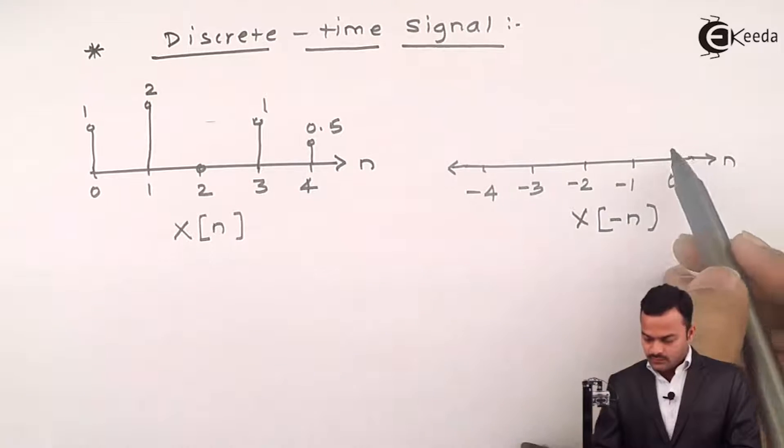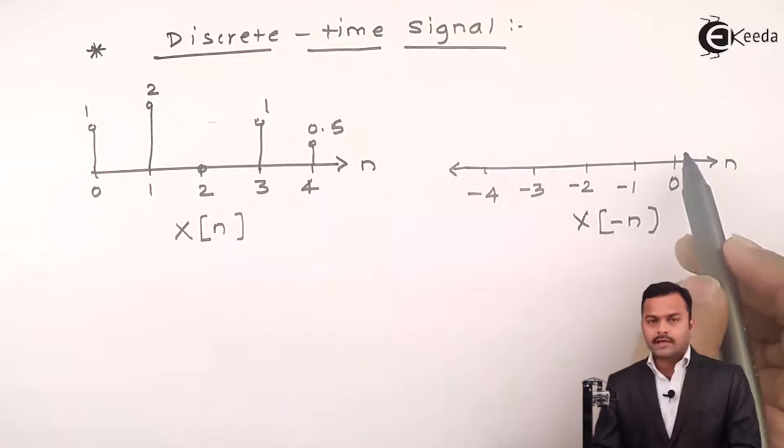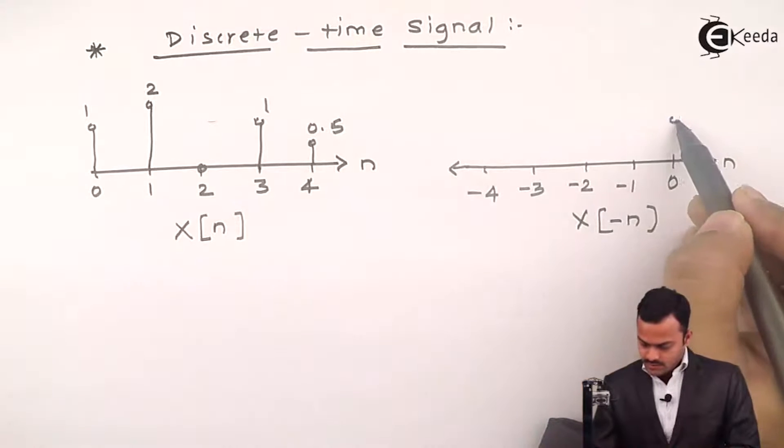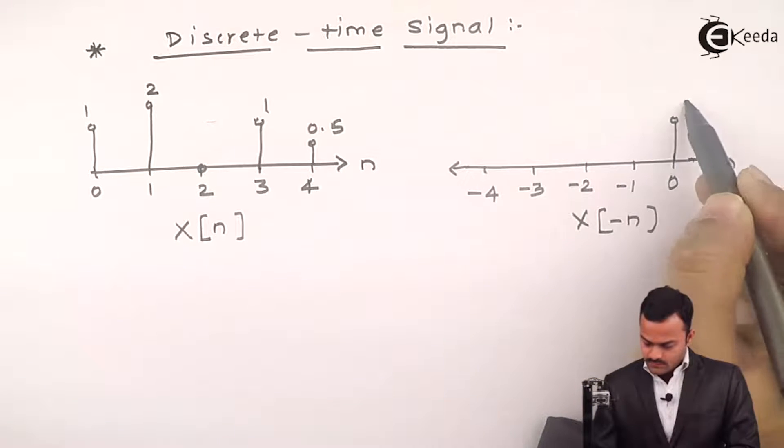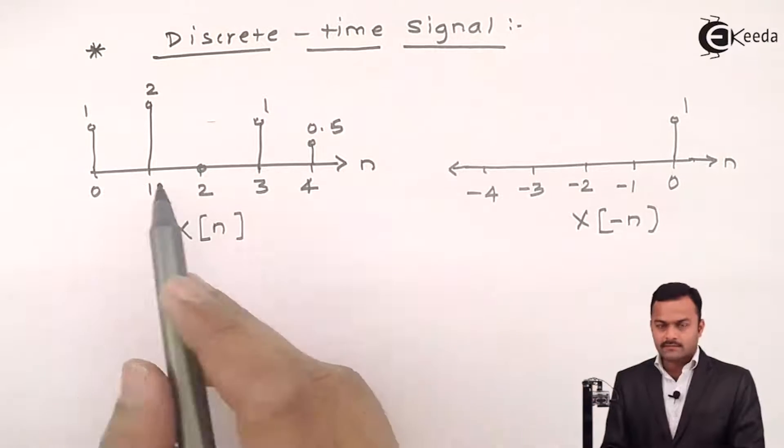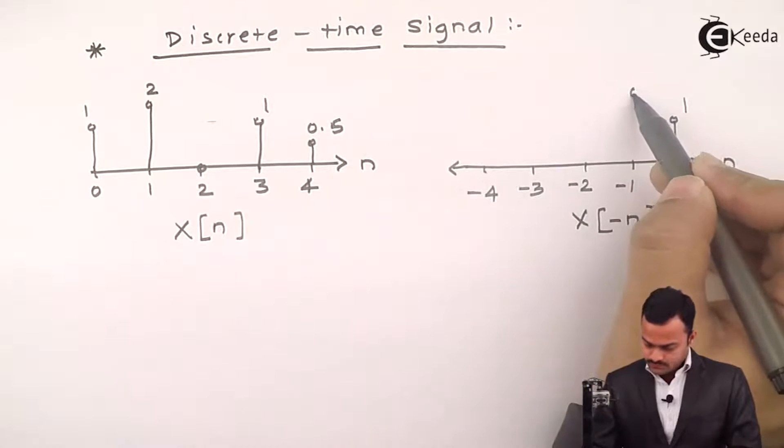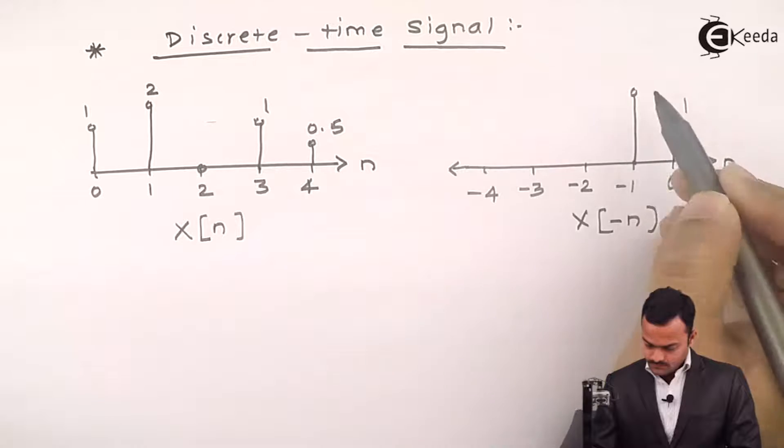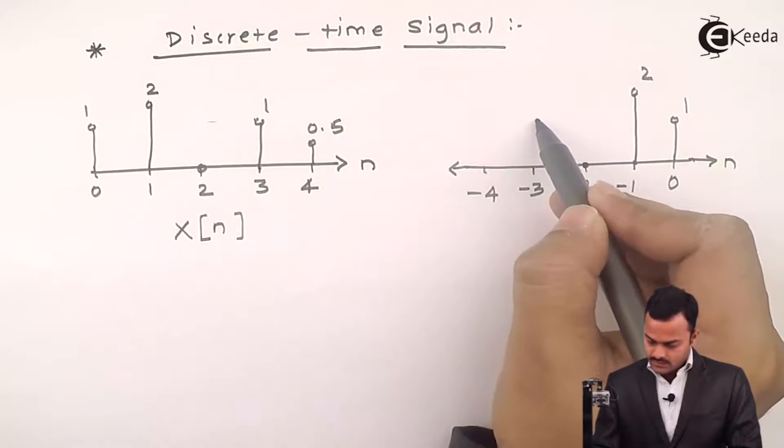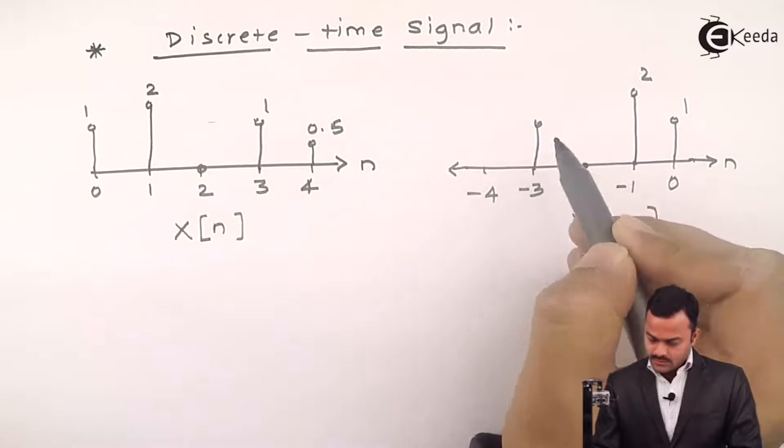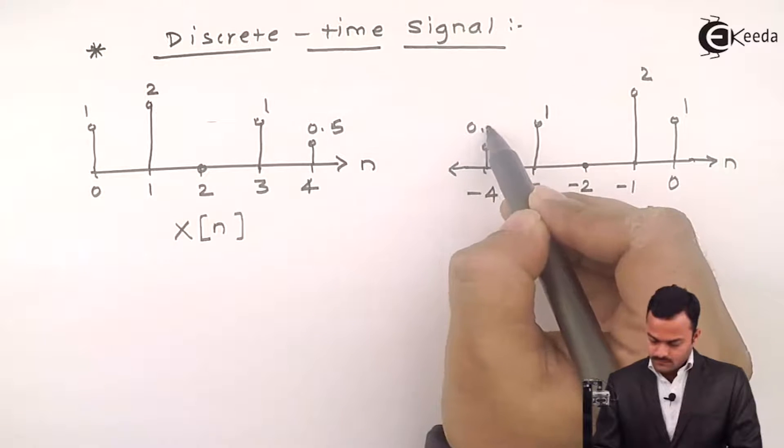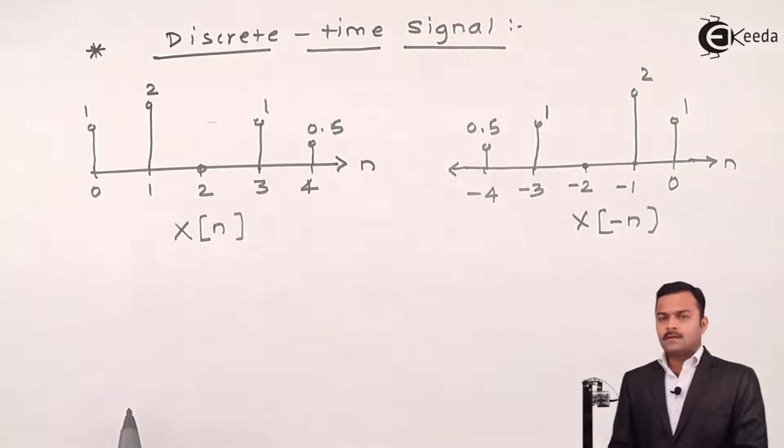And we will have the value for X of 0 it is same as original signal 1 but X of minus 1 will be X of 1 which is 2 and likewise you will get all the related values.